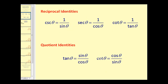The reciprocal identities: cosecant theta is equal to one over sine theta, secant theta is equal to one over cosine theta, and cotangent theta is equal to one over tangent theta. The quotient identities: tangent theta is equal to sine theta divided by cosine theta, and cotangent theta is equal to cosine theta over sine theta.